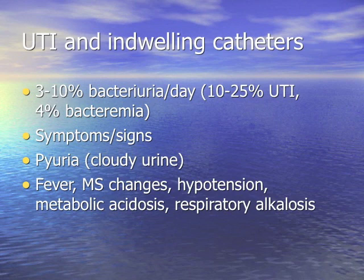For urinary tract infections, the Foley catheter has a 3-10% bacteriuria per day, 10-25% UTIs, 4% bacteremias. Signs include cloudy urine, pyuria, fever, mental status changes, hypotension, acidosis, or even alkalosis.